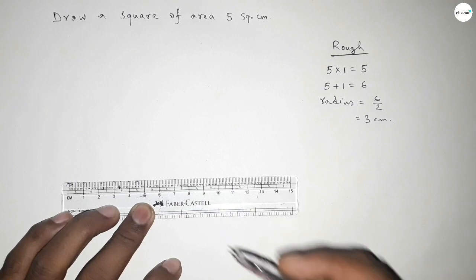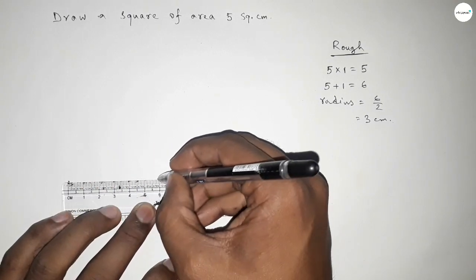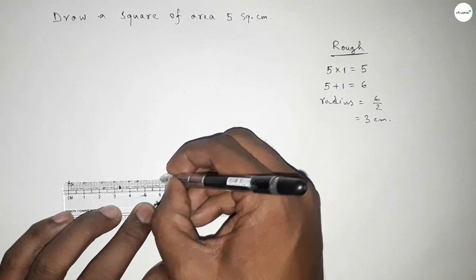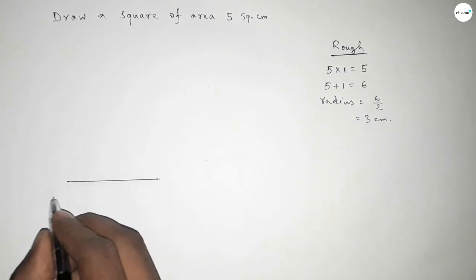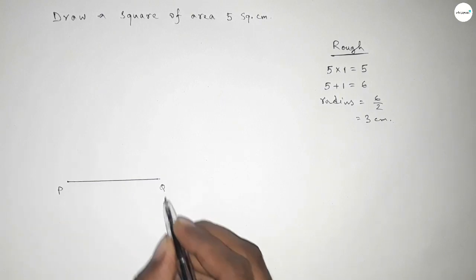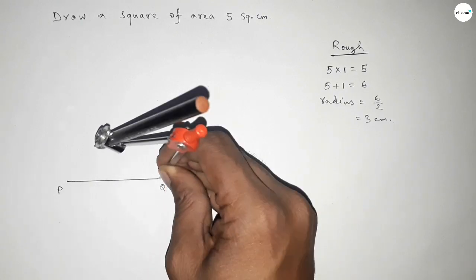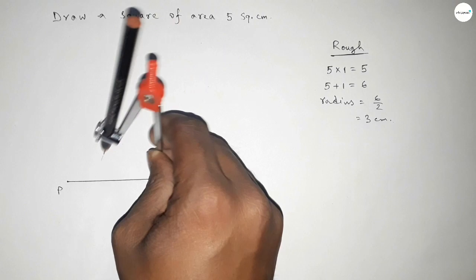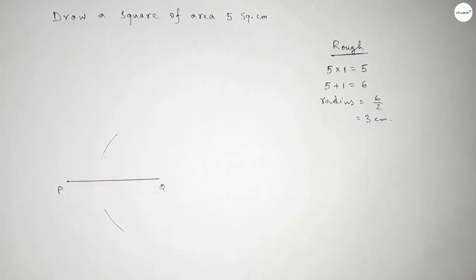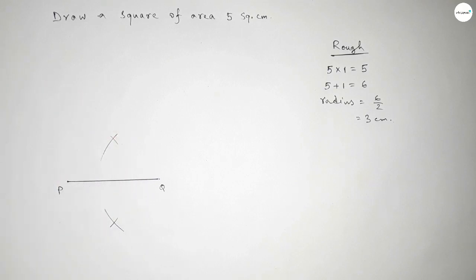First, drawing here a line of length 6 centimeters. Taking this as line PQ. Now, by bisecting the line PQ, taking greater than half of PQ and drawing an arc here and an arc here with the same length.